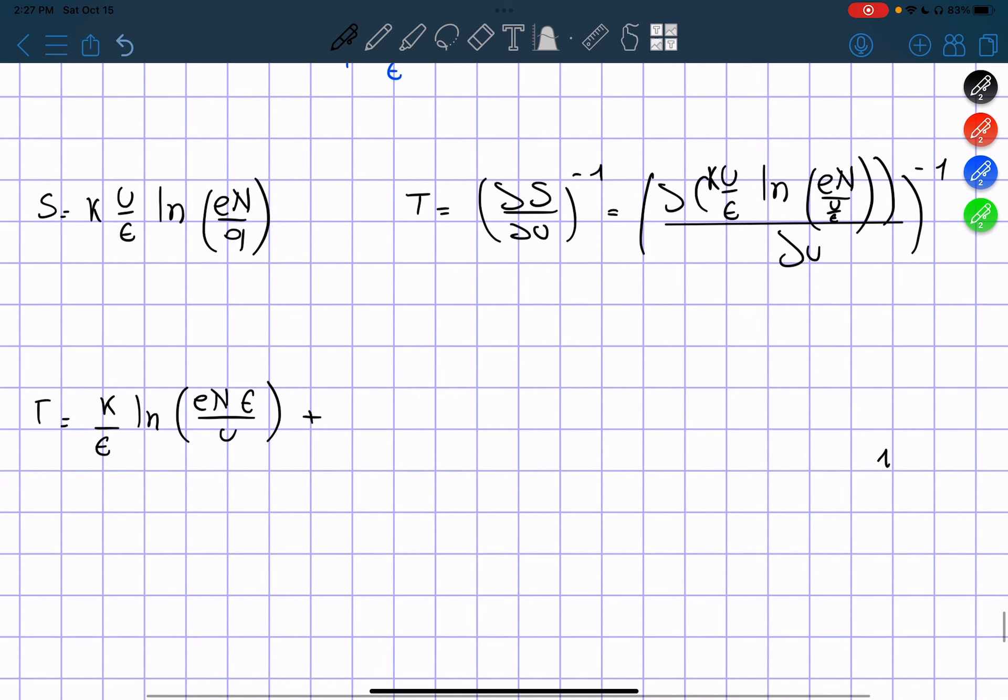K U over constant, and then we derive this part right here, which is going to be equal to simply negative 1 over U, I believe. Because ln of U would be 1 over U. Yeah. So then we have a negative.